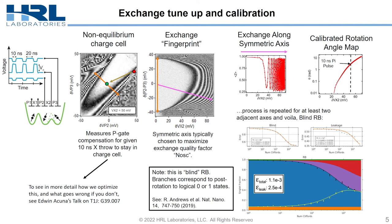If you can do this for two adjacent axes, we can do what we call blind randomized benchmarking, which is a leakage-sensitive form of randomized benchmarking. And indeed, in an optimized setup for this device, we're able to get single qubit errors down to 1e-3, with about a quarter of that error due to magnetic noise.